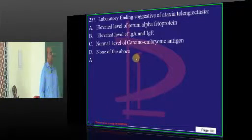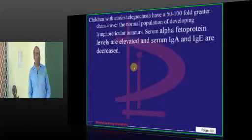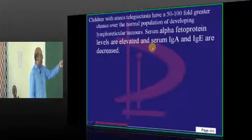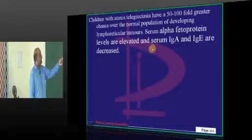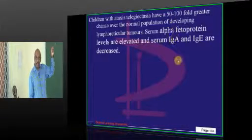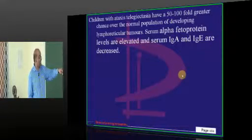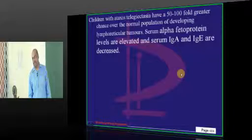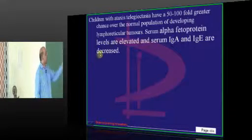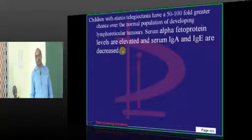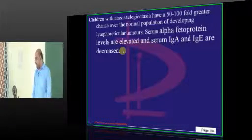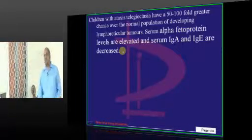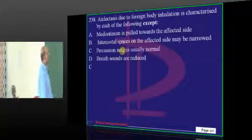What suggests ataxia telangiectasia? Typically you have elevated IgA with decreased IgE. Also, serum alpha-fetoprotein levels are typically elevated — that is what I want to underscore for all of you.